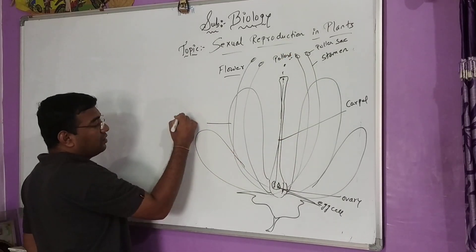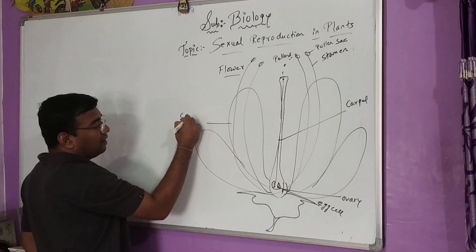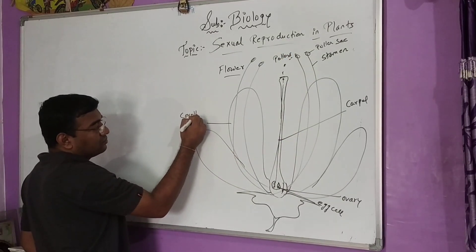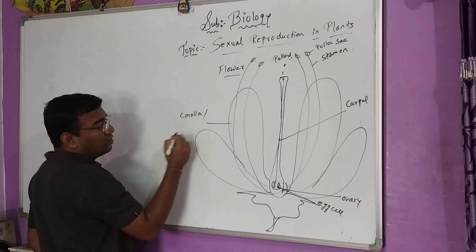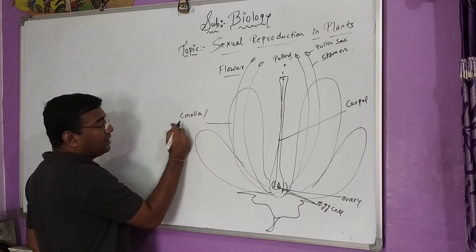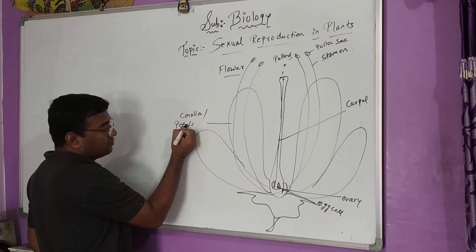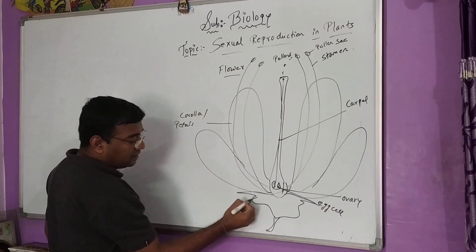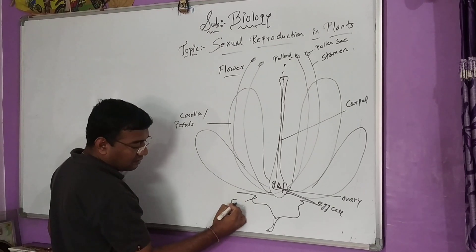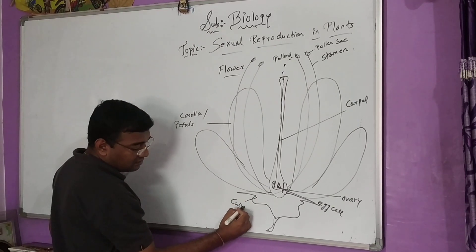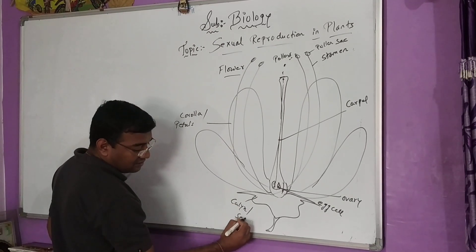This is your corolla — we also call corolla as petals. And this is your calyx — we also call calyx as sepals.